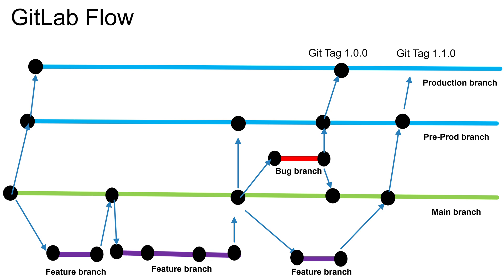In GitLab Flow you will have a main branch and feature branches. The main branch is long-lived and feature branches are short-lived — they exist only for making changes and are deleted afterward. The main difference in GitLab Flow is that for deployment purposes you have a branch for each environment. Initially you will create a pre-production branch based on the master branch and a production branch as well. Once features have been committed to the main branch, you will merge those changes from main into the pre-production branch.